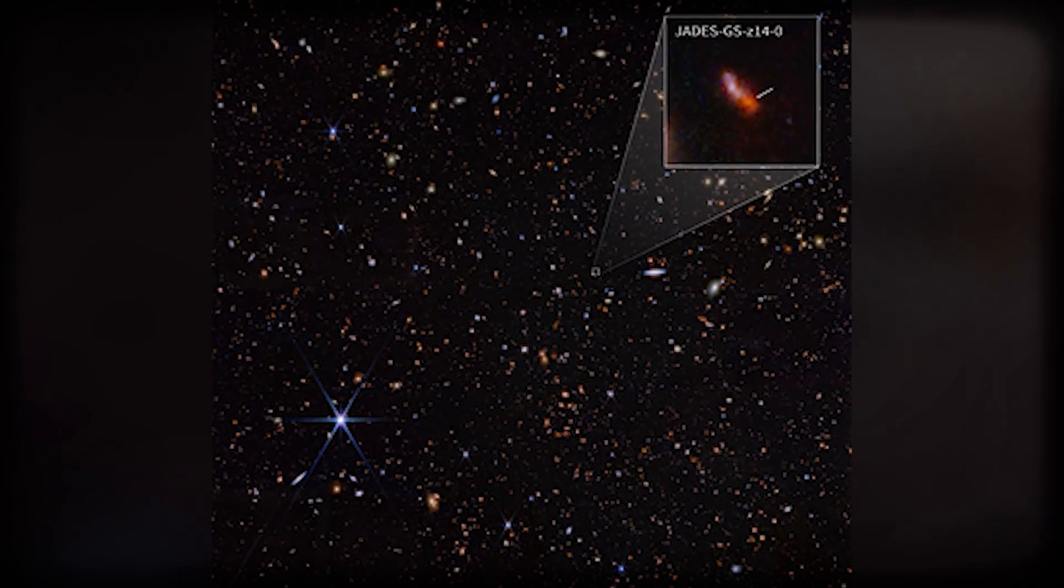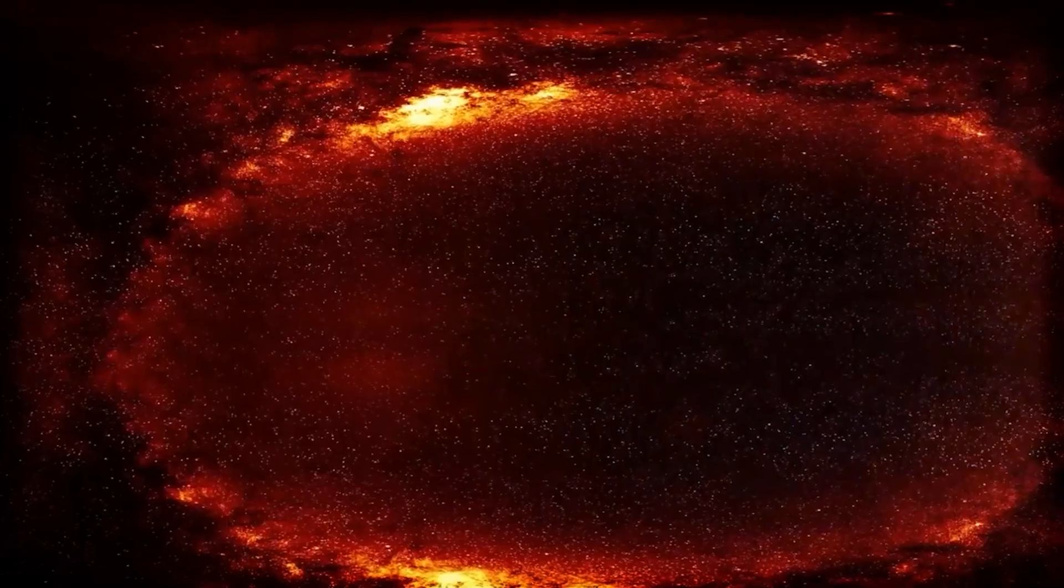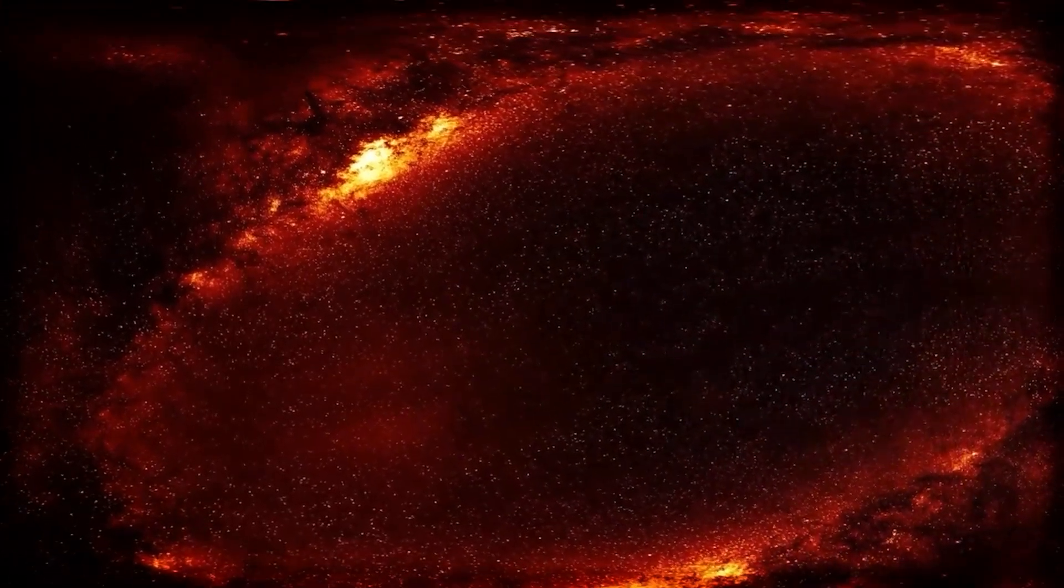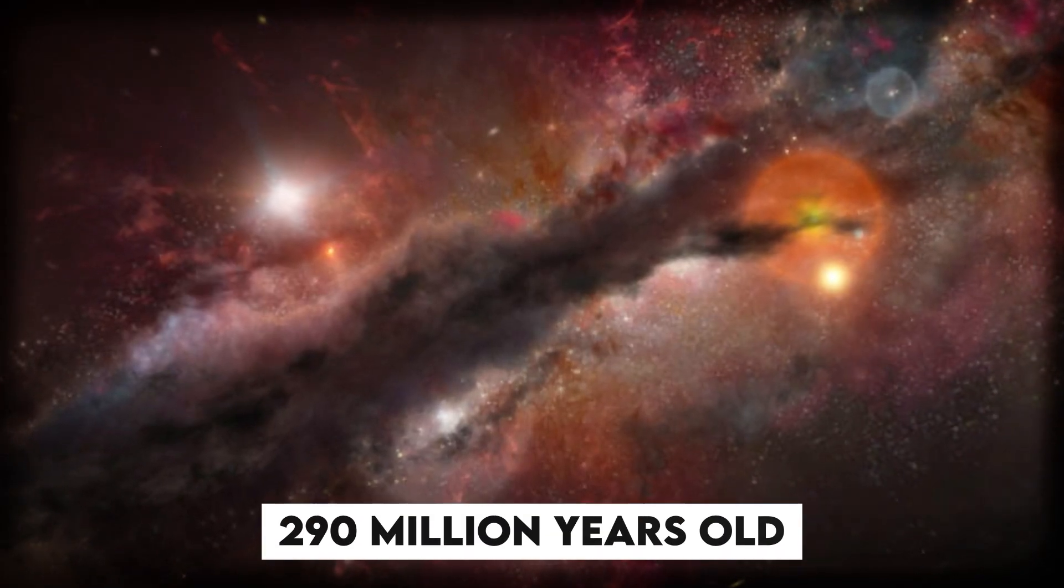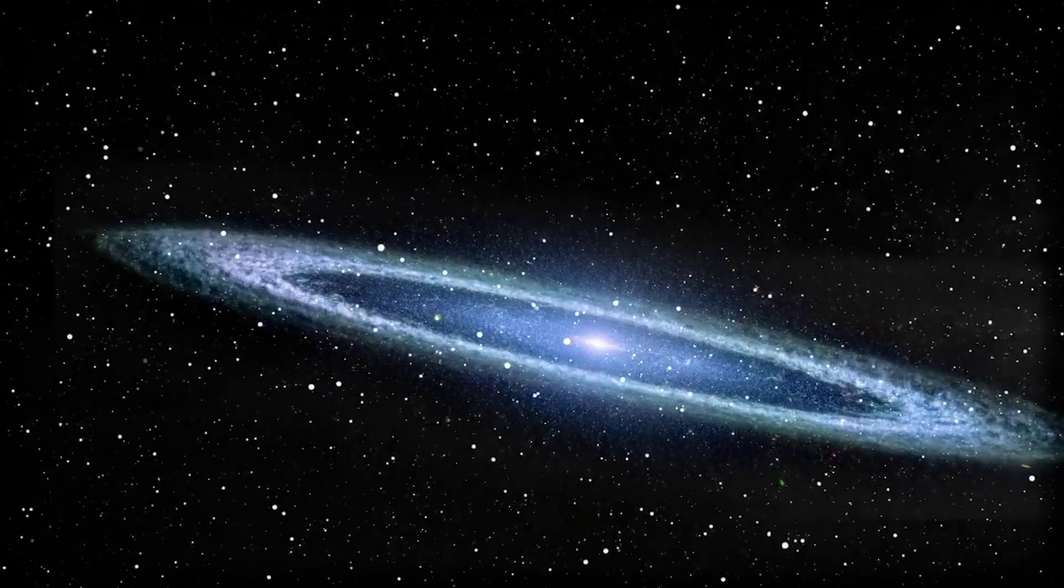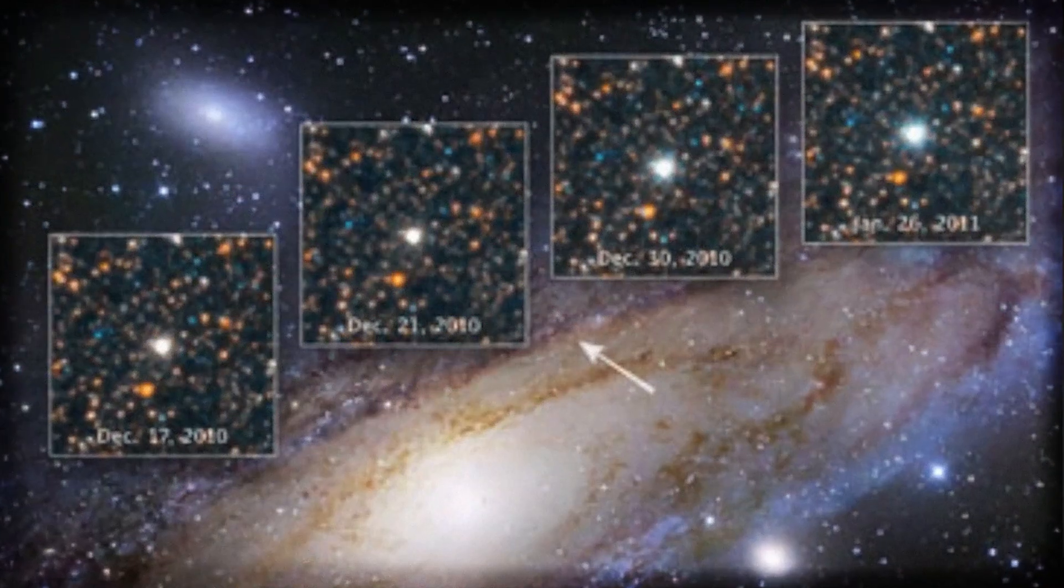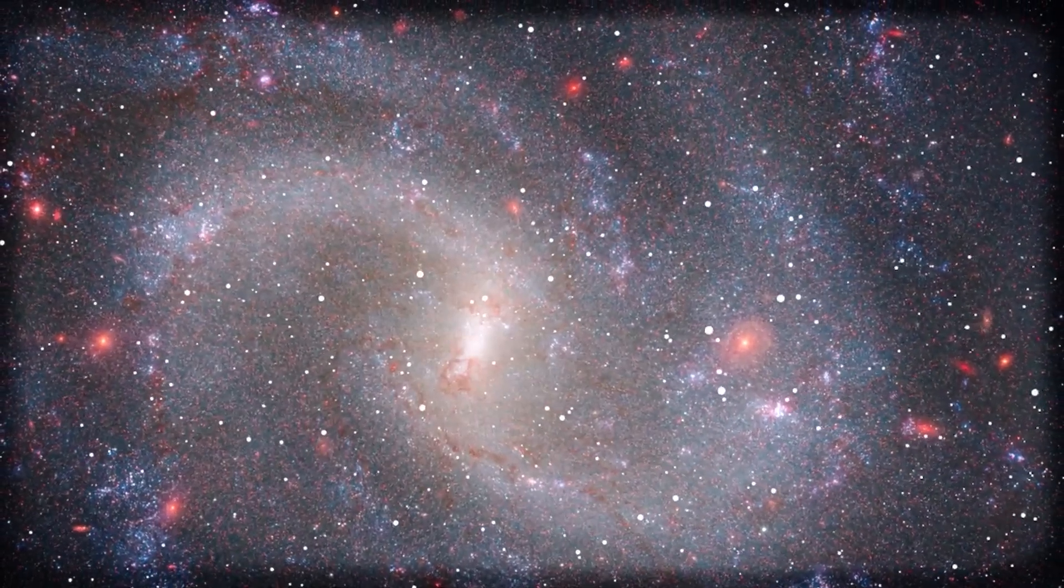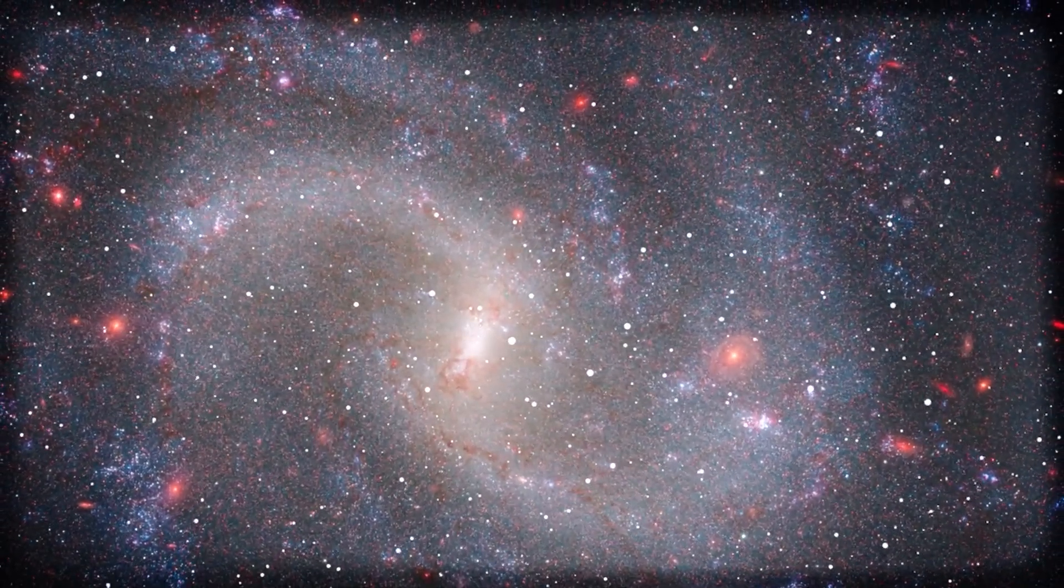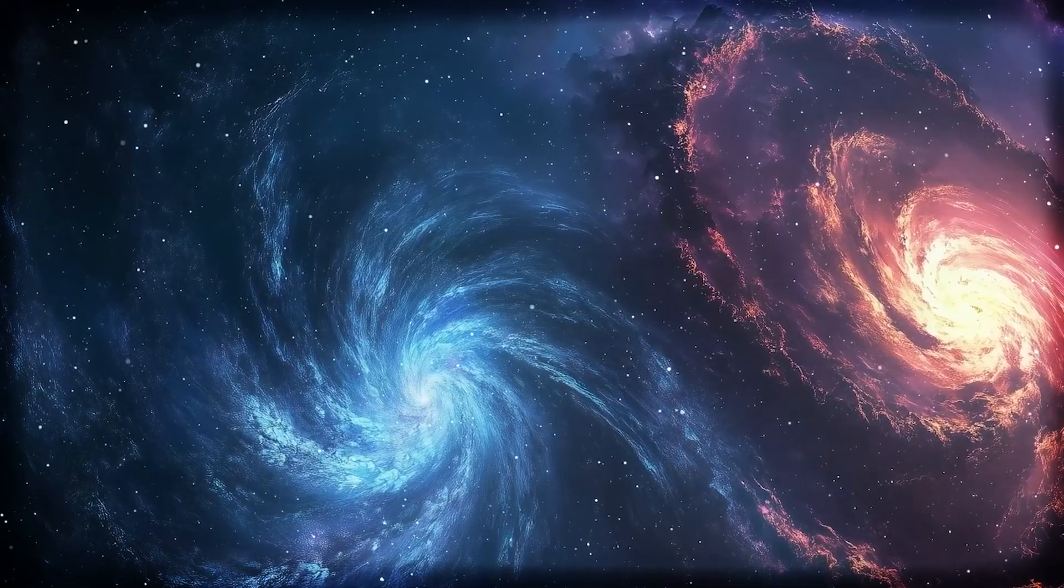Take JADES-GS-z14, the most distant galaxy ever captured by the James Webb Space Telescope. We're not seeing it as it exists today. We're seeing its baby picture. That light left the galaxy when the universe was just 290 million years old, a mere blink after the Big Bang. But here's the kicker, that galaxy is now gone from our reach, not because it vanished, but because it's moved beyond the edge of what we can ever observe. The space between us and GS-z14 is stretching so fast, thanks to the accelerating expansion of the universe, that any light the galaxy sends out now will never reach us, ever.